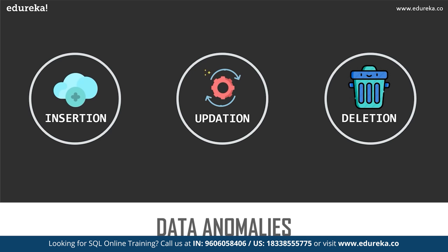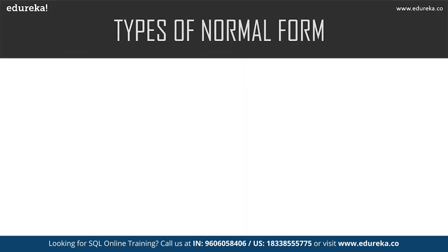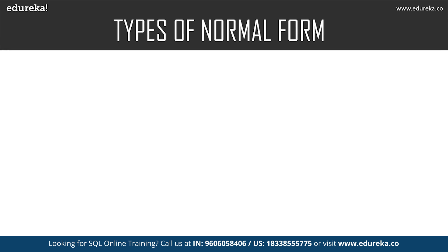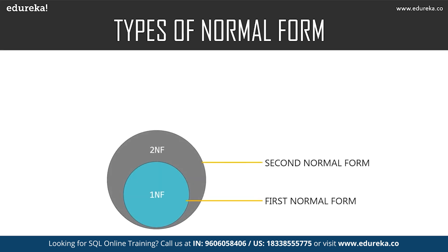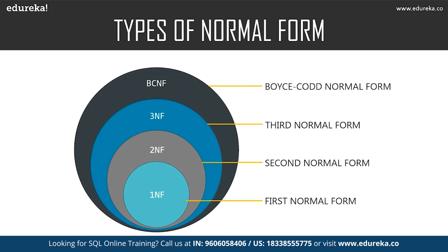These were some of the problems that occurred while managing data. To eliminate all these anomalies, normalization came into existence. There are many normal forms still under development, but let's focus on the basic and essential ones: first normal form, second normal form, third normal form, and finally Boyce-Codd normal form.